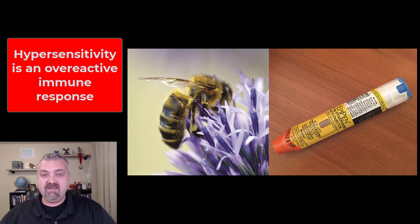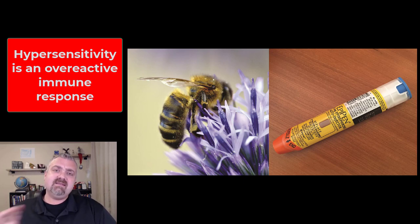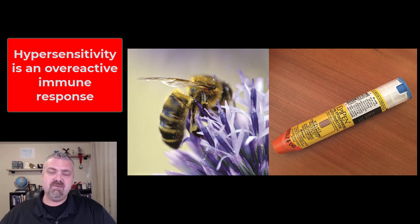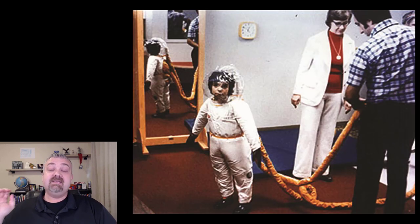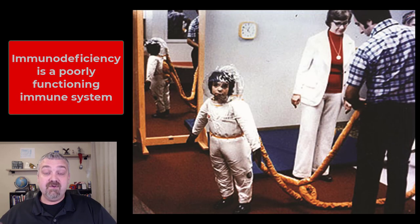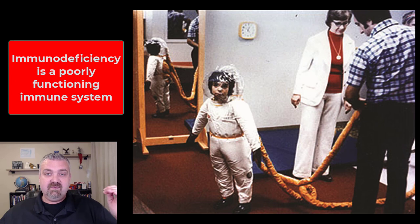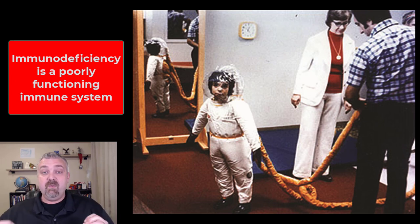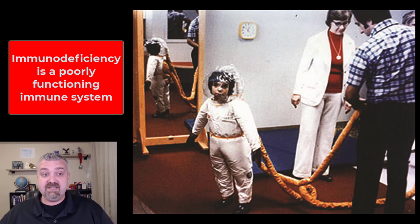That's why the EpiPen can be a life-saving tool. So those are a couple of examples of hypersensitivities — when your immune system overreacts when exposed to an antigen, a cell surface marker. Next, we have immunodeficiencies. On one end we have an overreactive immune system that's too powerful; on the other end of the spectrum, we have an immune system that's too weak — that would be immunodeficiencies.